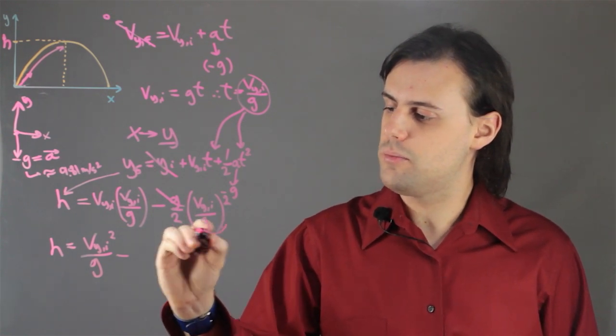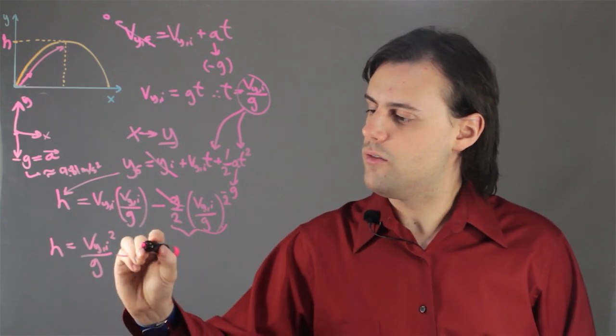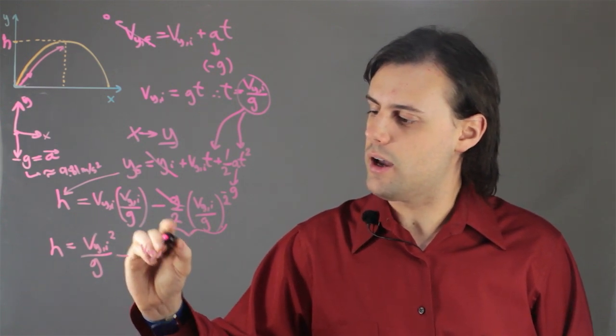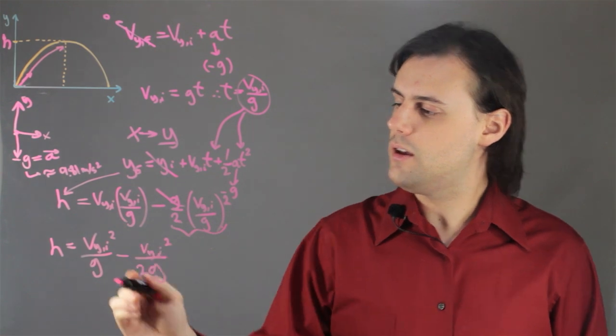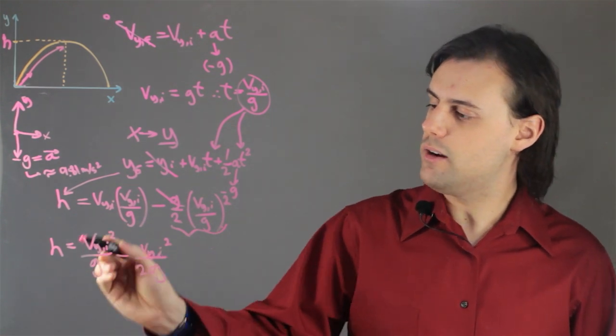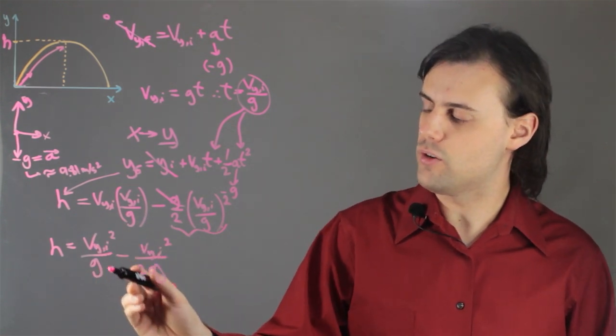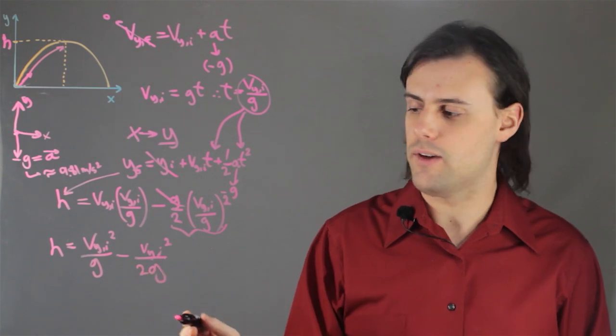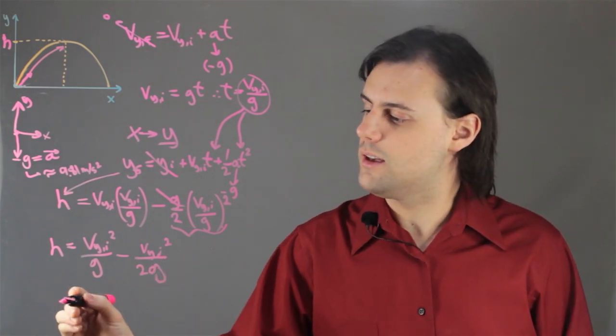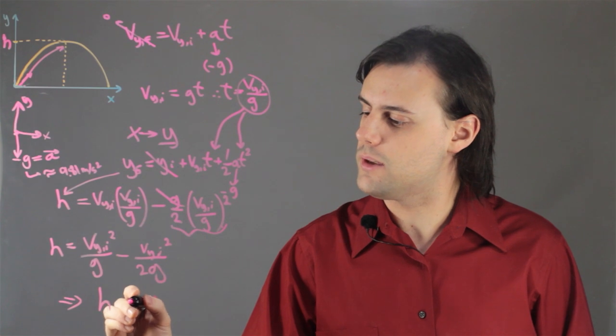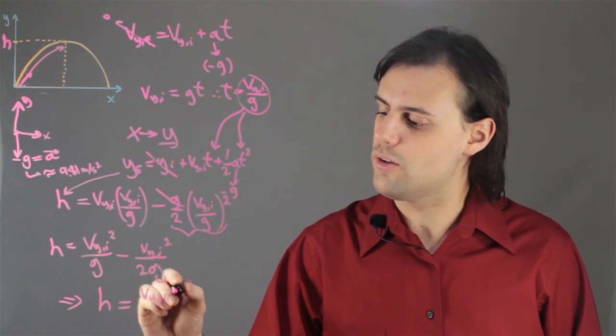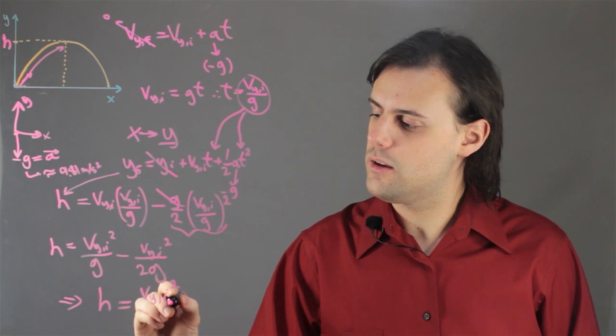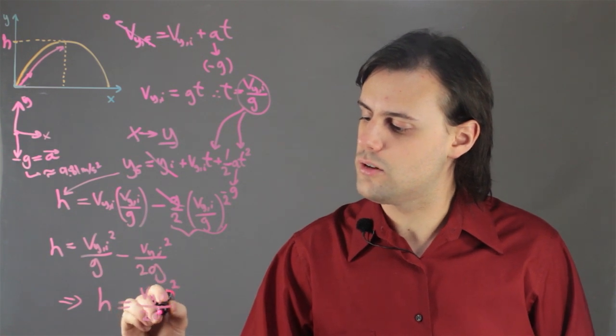So this becomes v_y i squared divided by 2g. And I see that one value of v_y i squared over g minus one half of that value simply gets me the result, the maximum height being equal to the initial velocity in the y direction squared divided by 2g.